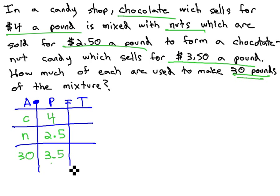Once the part column, or the price column, is filled in, I always check to make sure that 3.5 is between the other two parts. 3.5 is between 2.5 and 4, so I know I've got my table set up correctly.